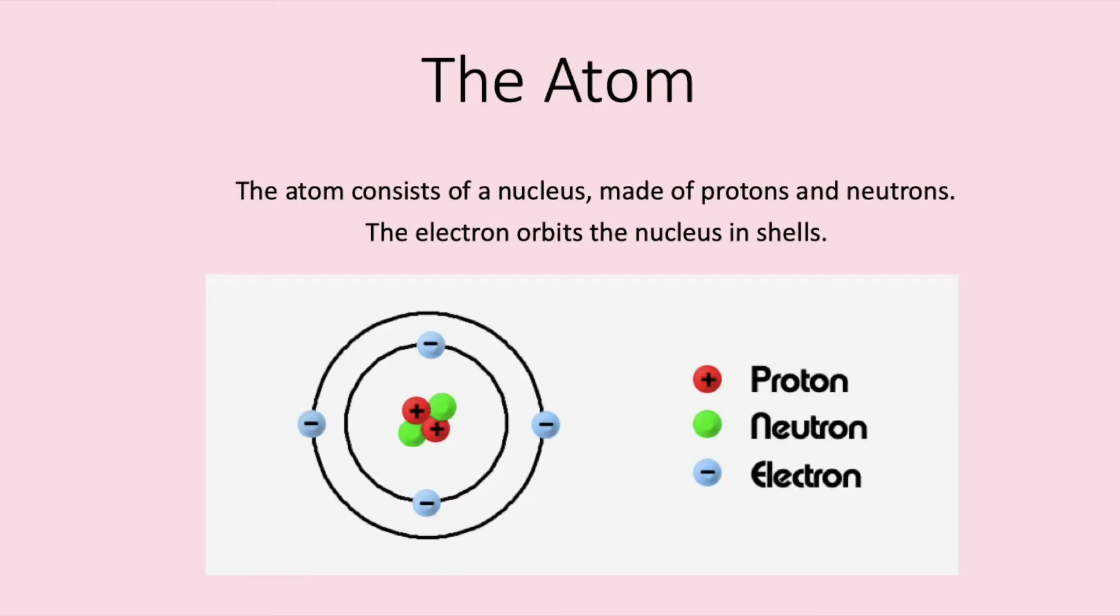This should be a recap from GCSE. You learnt that an atom consists of a nucleus made up of protons and neutrons. A third type of subatomic particle, the electron, occupies shells around the nucleus.